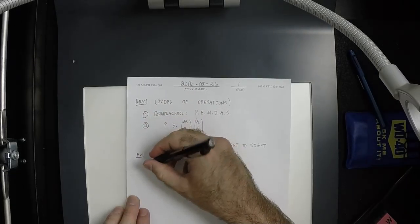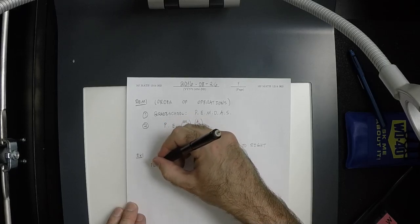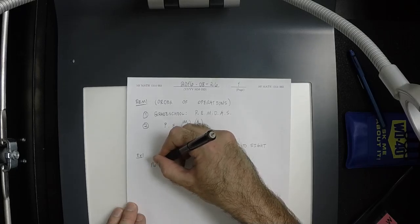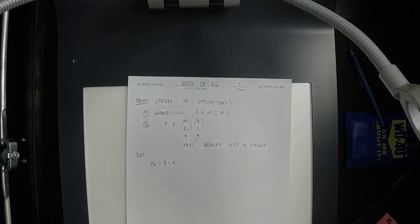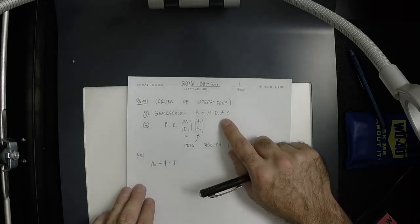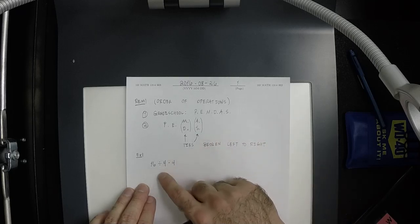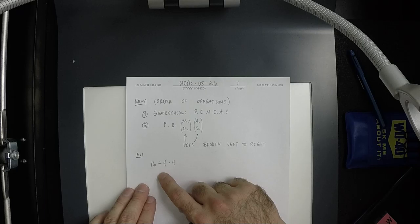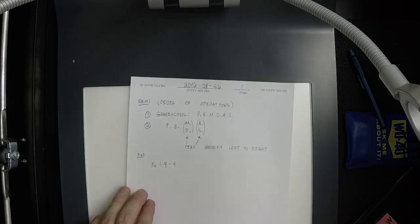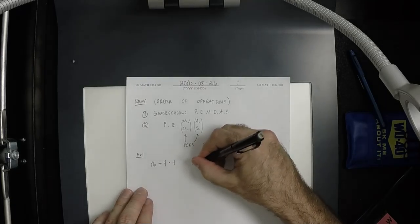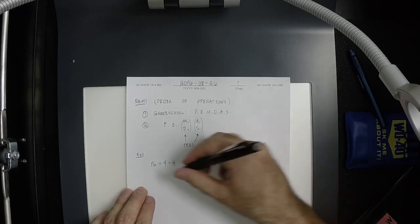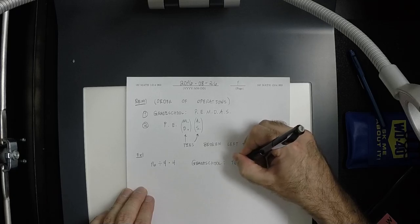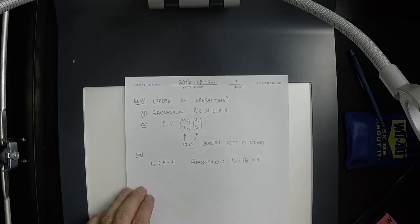Many of you probably got the answer incorrect the first go-round. In the grade school reckoning, the multiply comes first. So you might think it should be 16 divide 16, so that the answer is 1. But this is actually not right. It's incorrect.